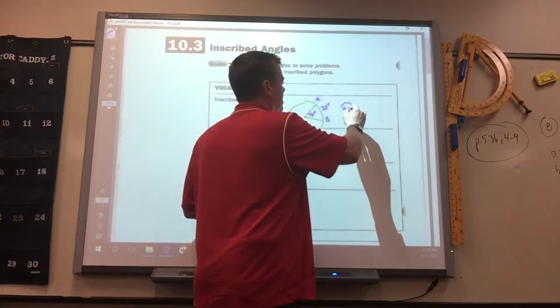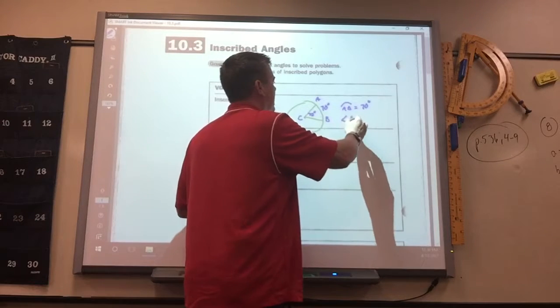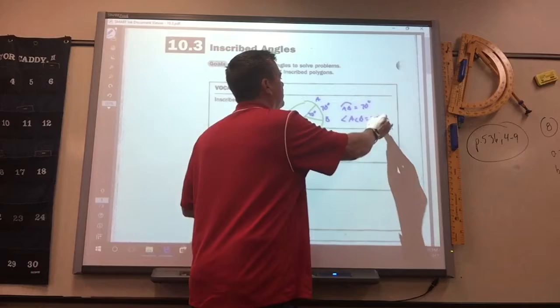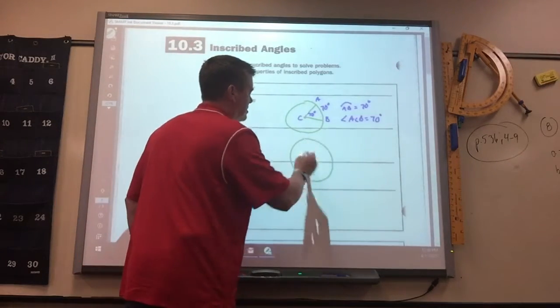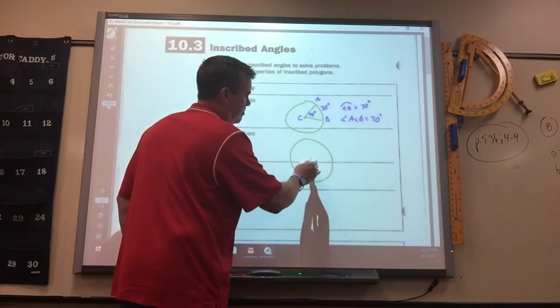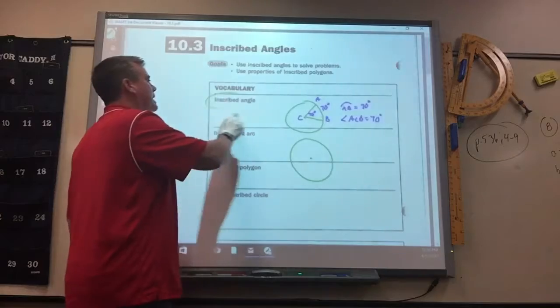So arc AB is 70 degrees, and angle ACB is also 70. So what we're doing today, it's kind of the same thing, except instead of a central angle, we're doing inscribed.